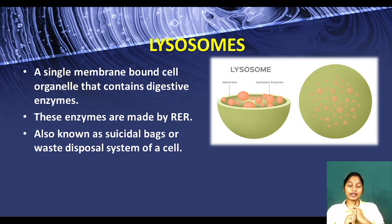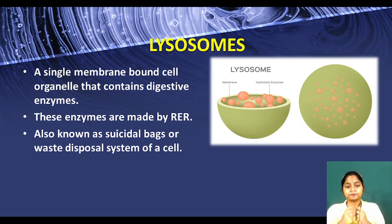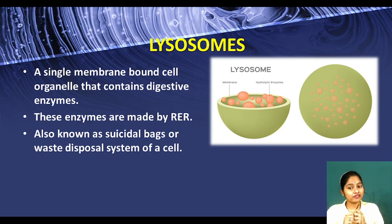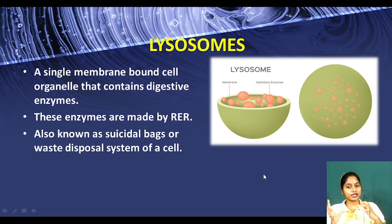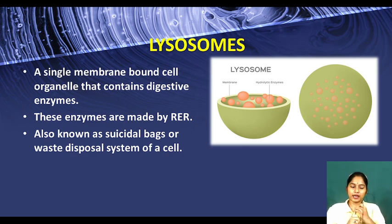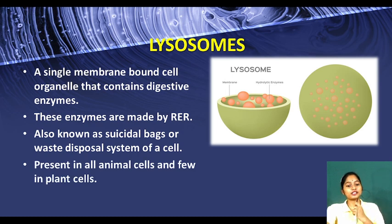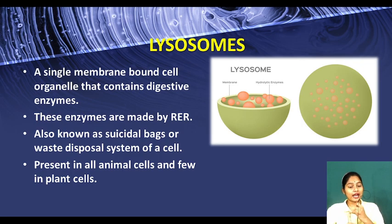Lysosomes are called the suicidal bank because when a cell is damaged, the lysosomes move near the cell membrane, burst, kill themselves, and destroy the damaged cell as well. In plants, waste products are stored in the form of gum and latex, so plants have fewer lysosomes. In animal cells, waste products must be removed, so there are a large number of lysosomes. Lysosomes are present in all animal cells but only a few plant cells.